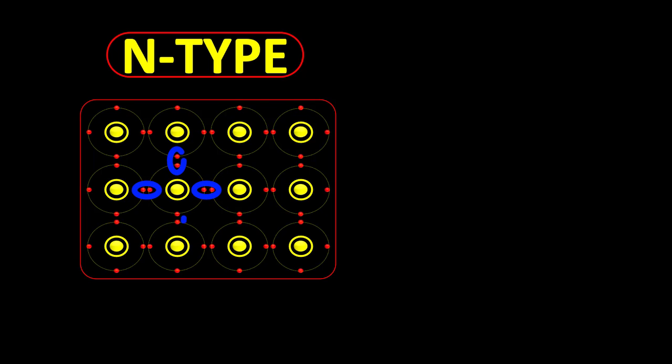In a pure semiconductor, there are no free electrons to carry electric current.